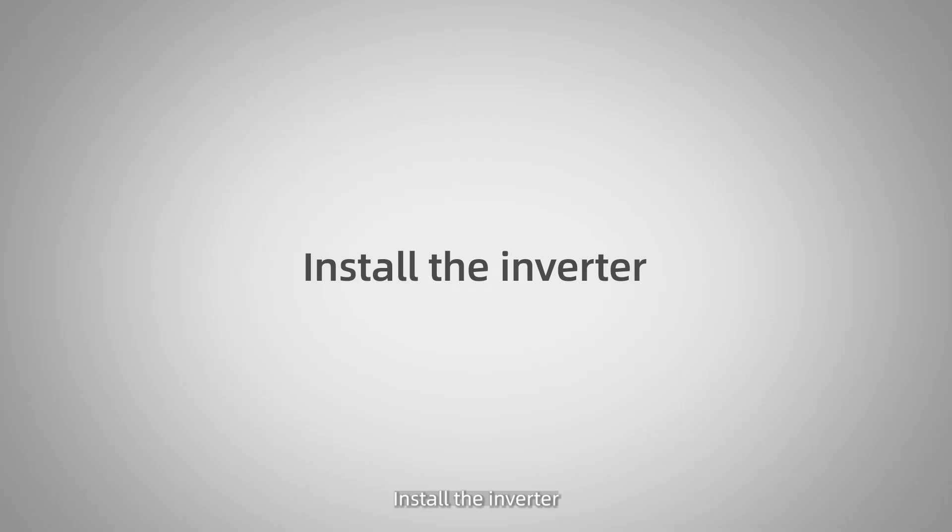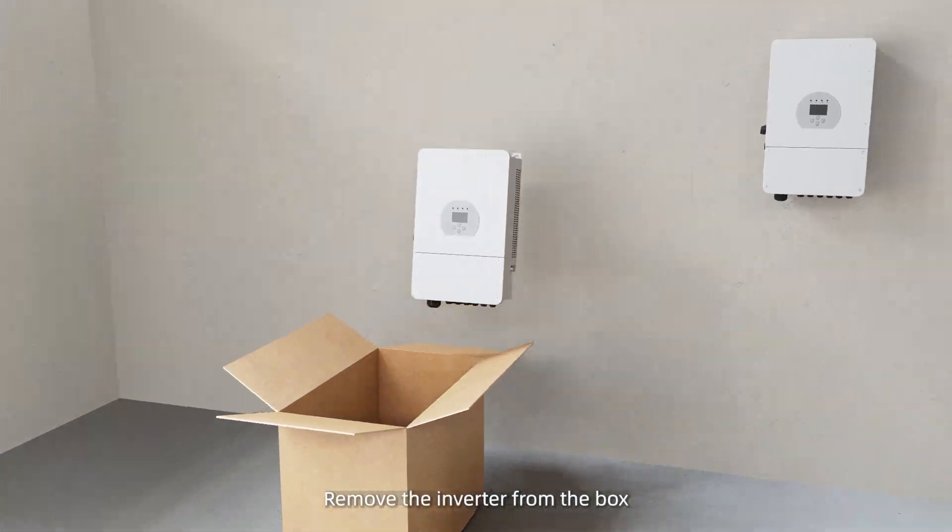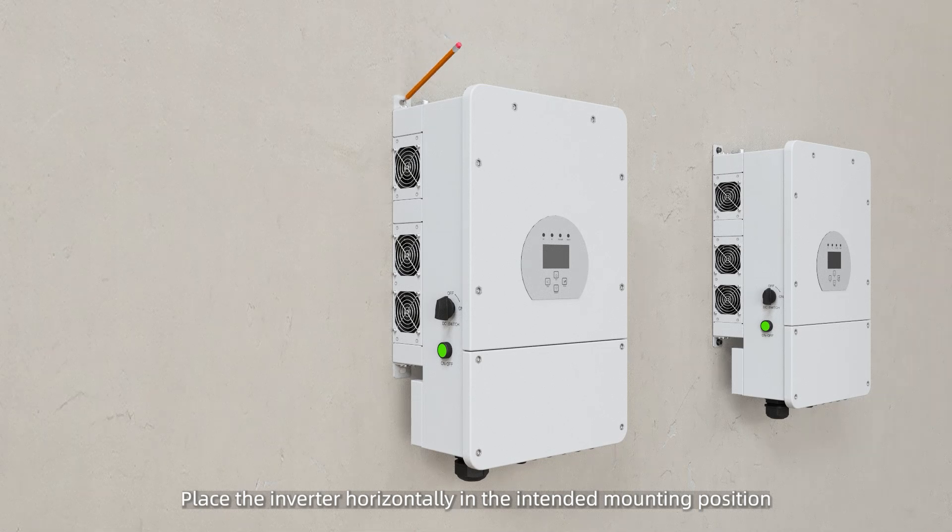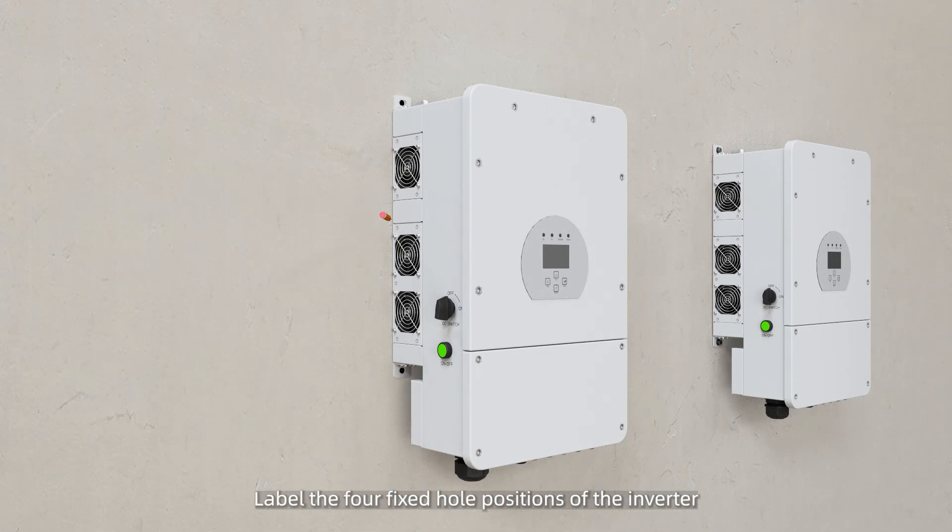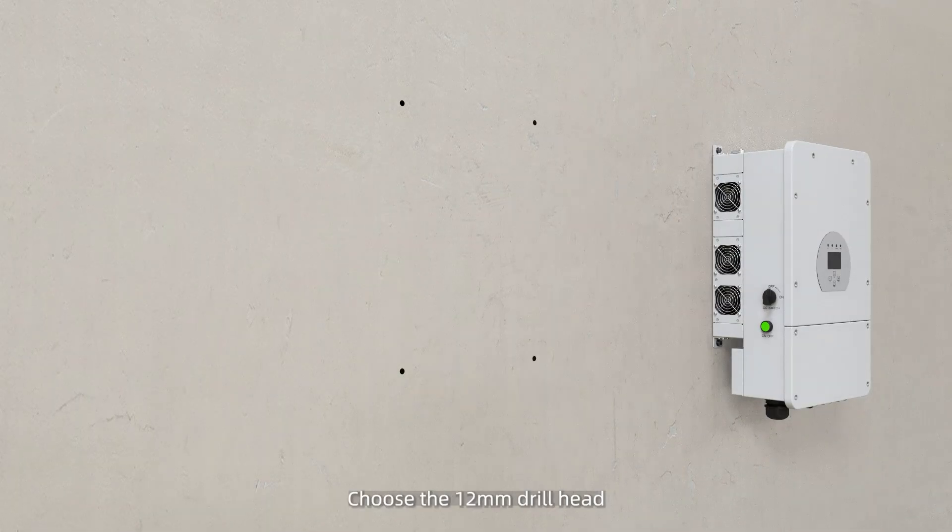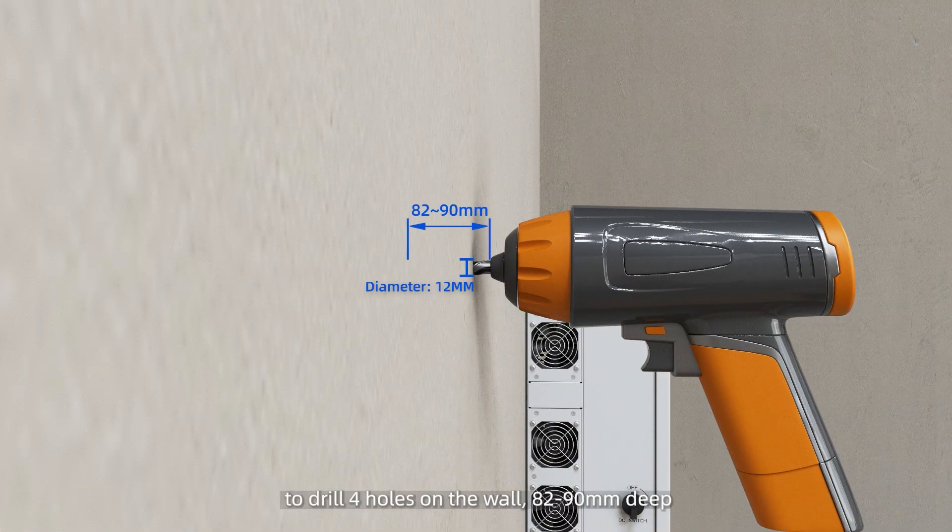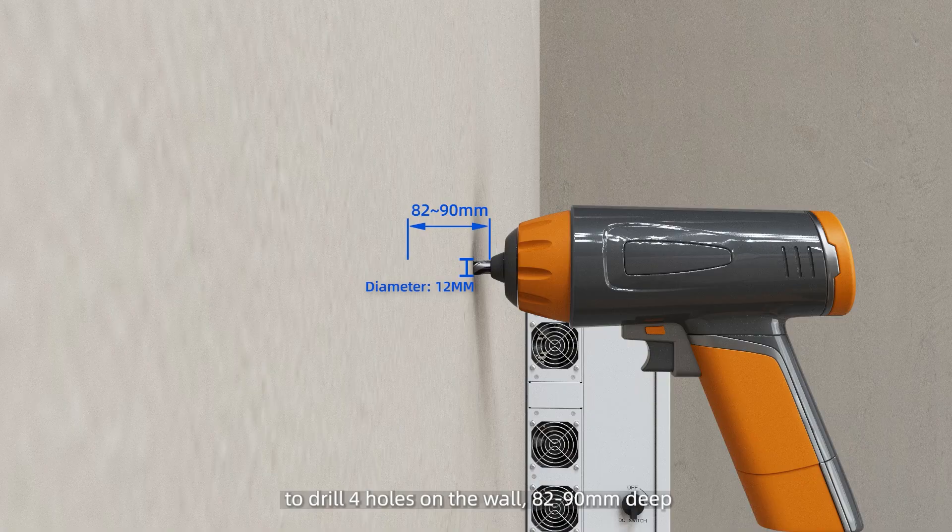Install the inverter. Remove the inverter from the box. Place the inverter horizontally in the intended mounting position. Label the four fixed hole positions of the inverter. Choose the 12mm drill head to drill four holes on the wall, 82 to 90mm deep.